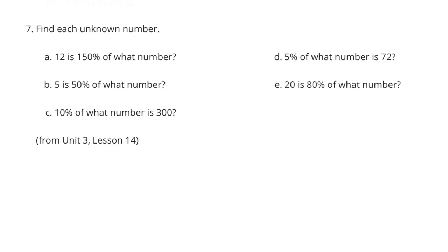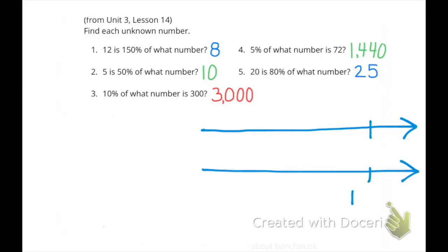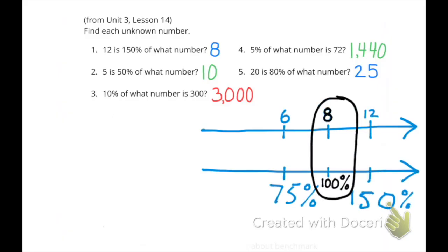Number seven. Find each unknown number. For number one, one hundred fifty percent is twelve. Half of twelve is six. Half of one hundred fifty is seventy-five. Exactly halfway between six and twelve is eight, and halfway between seventy-five percent and one hundred fifty percent is one hundred percent. Eight is one hundred percent of the number.